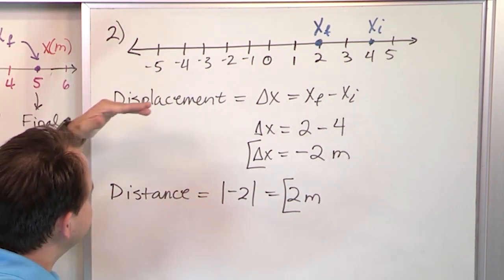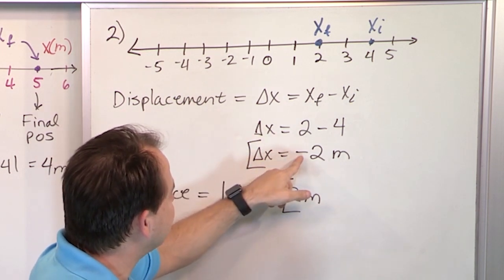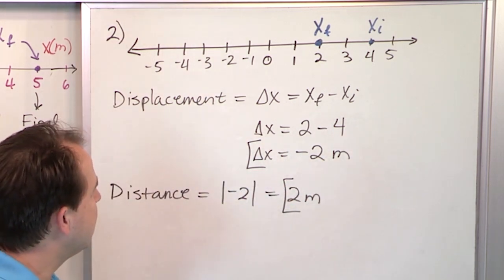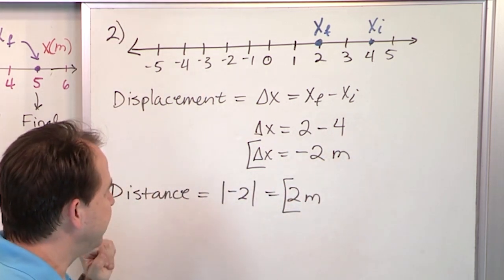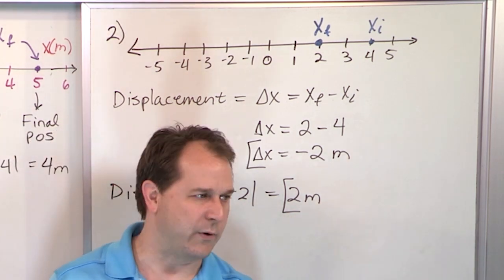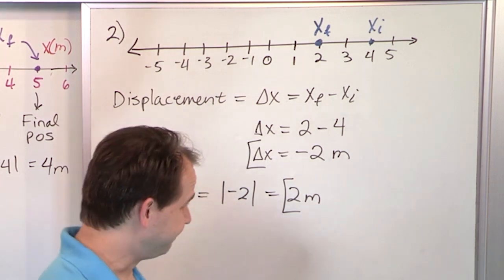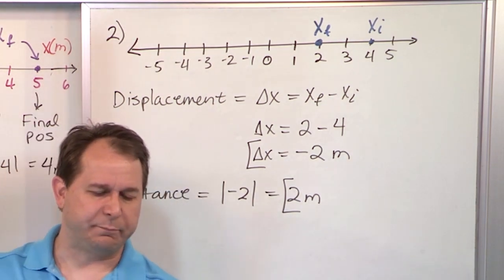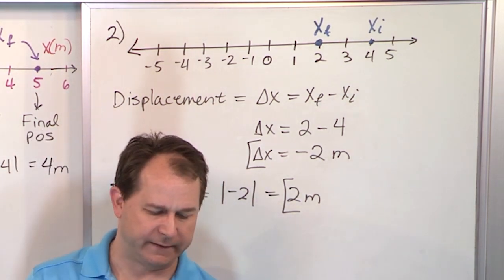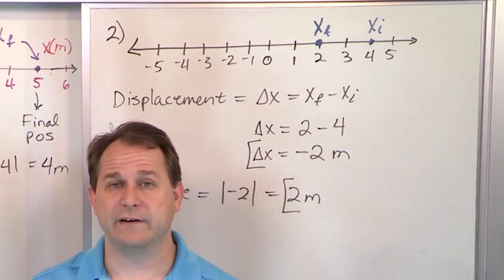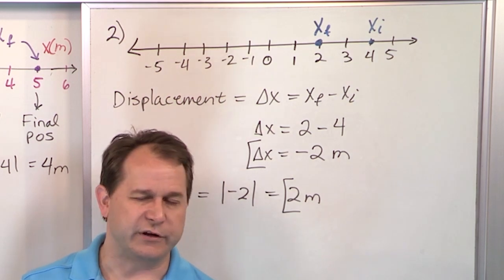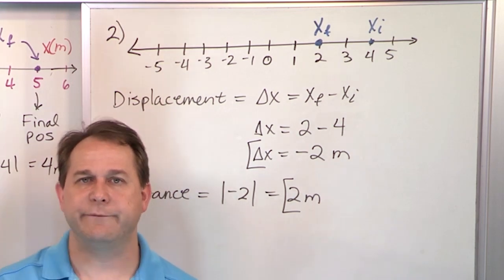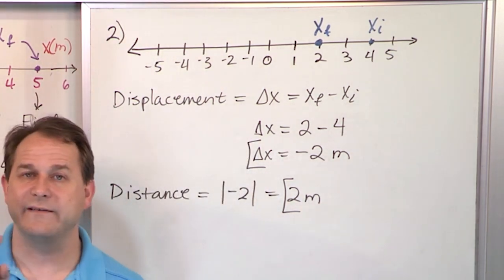So in a nutshell, displacement is how far I moved, and it also carries direction information — positive for right-hand movement and negative for left-hand movement. Distance: you don't care about direction at all. All I want to know is how far did I go. So I take the sign and throw it away — I only moved two meters. Distance is always positive. Displacement can be positive or negative depending on if you're moving right or left. Displacement carries more info than distance because you have a sign in there.